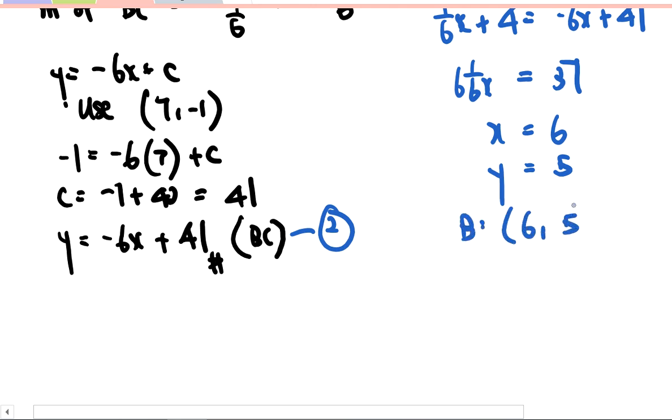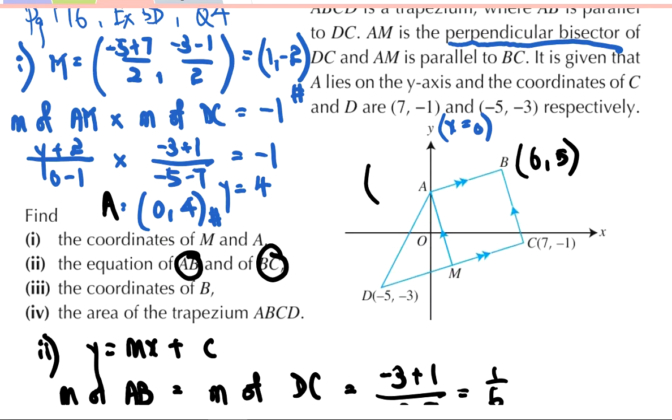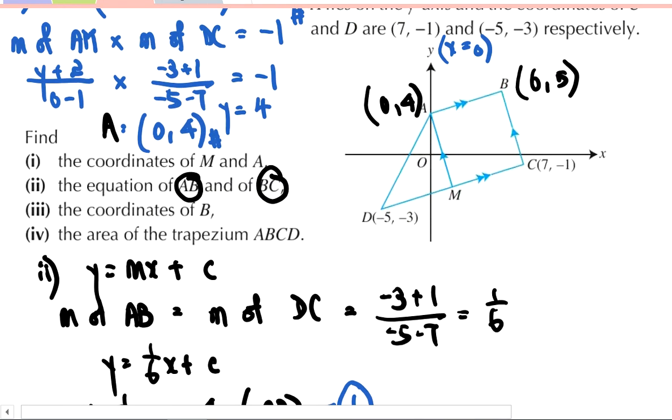Quickly just substitute back inside—your y will be equal to 5. So I'm able to write the coordinates of B in this case to be (6, 5). Previously in my part 1, I actually labeled the point (0, 4) to be M—it's not, it's actually the coordinates of A. So I'm going to write out all my coordinates. In part 4, I'm supposed to find the area of this whole trapezium ABCD.